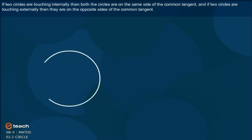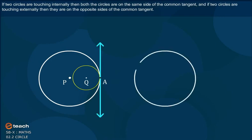If two circles are touching internally, then both the circles are on the same side of the common tangent. And if two circles are touching externally, then they are on the opposite sides of the common tangent.